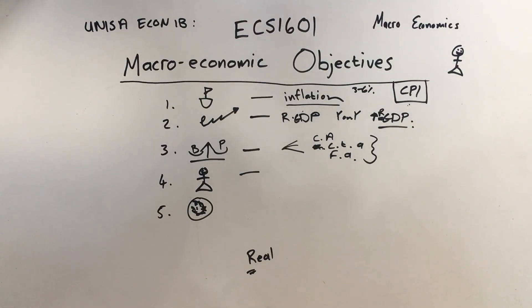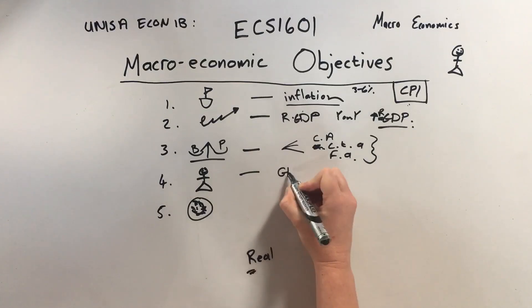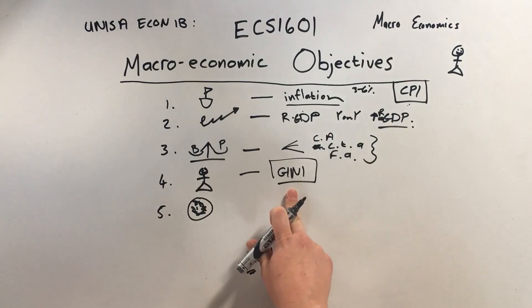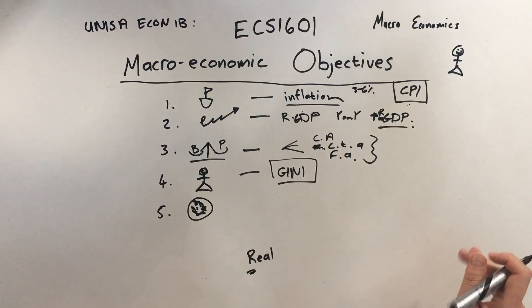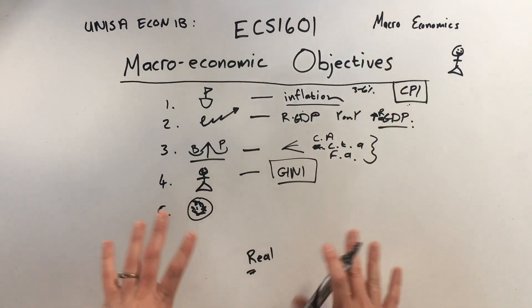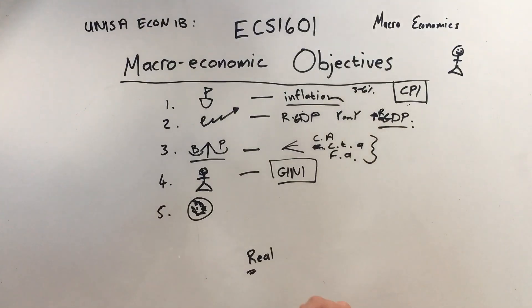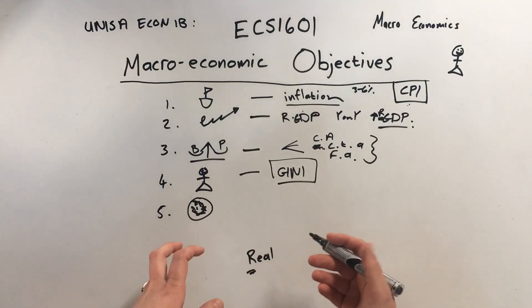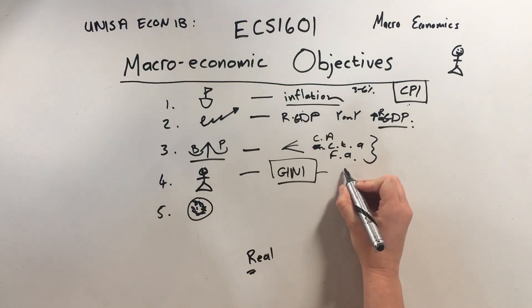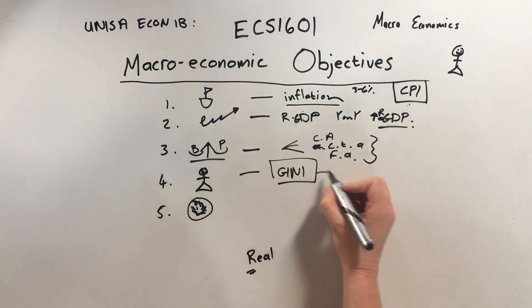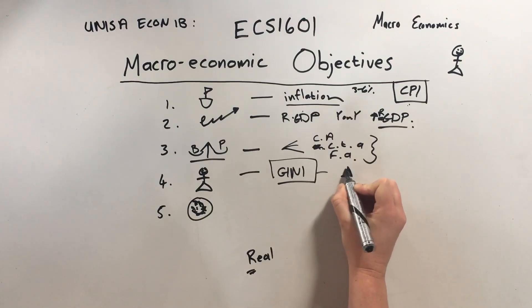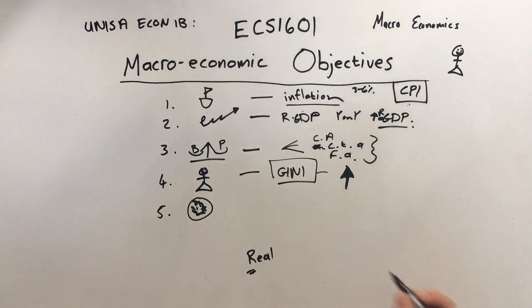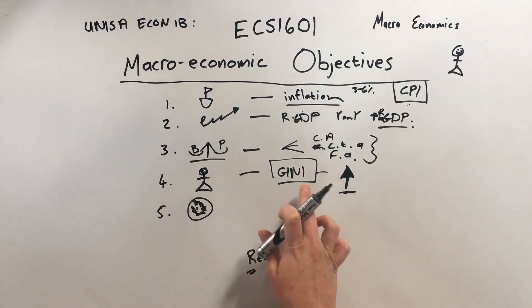For equitable distribution of income, we look at the Gini coefficient. The Gini coefficient looks at the difference between the amount of poor people and the amount of rich people in a country. The lower the Gini coefficient, the more equitable the income distribution. A place like New Zealand, where almost everybody earns about the same amount, has a low Gini coefficient and less social tension. The Gini coefficient is measured with the Lorenz curve. South Africa has a very high Gini coefficient — lots of shacks and mansions almost next to each other — and it's one of the government's objectives to lower that.